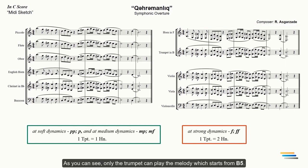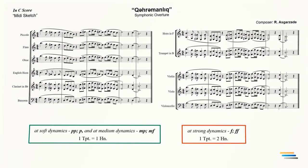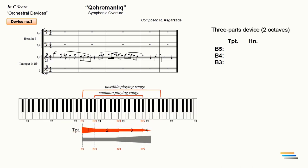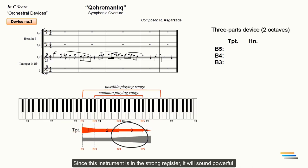As you can see, only the trumpet can play the melody which starts from B5. The first trumpet will play the upper octave. Since this instrument is in a strong register, it will sound powerful. That's why it can be used alone. In addition, because of their high frequencies, the top instruments always shine in the orchestra even without unison doubling. Hence, its register score should be marked with 4.